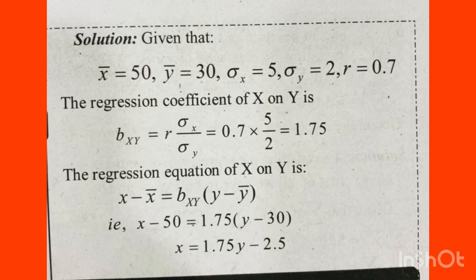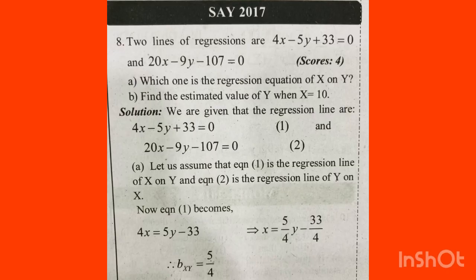Now the next problem. We have two regression lines: 20x minus 9y minus 107 equals 0, and 4x minus 5y plus 33 equals 0. We need to identify which one is the regression equation of x on y, and find the estimated value of y when x equals 10.